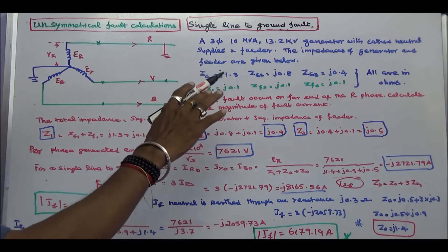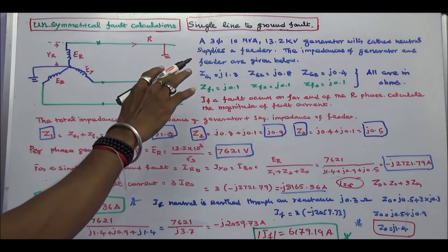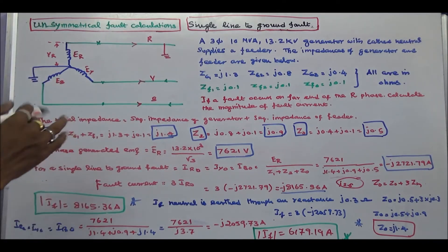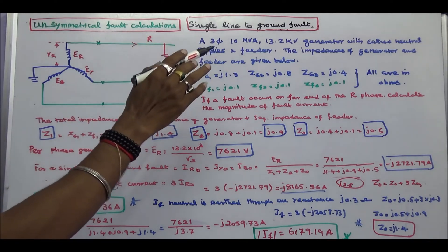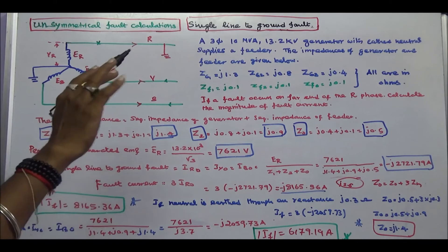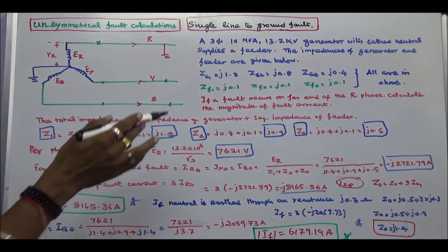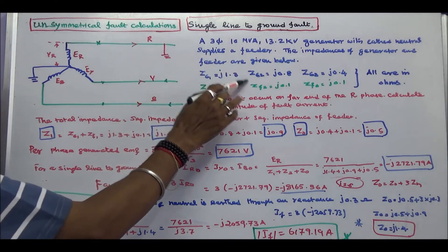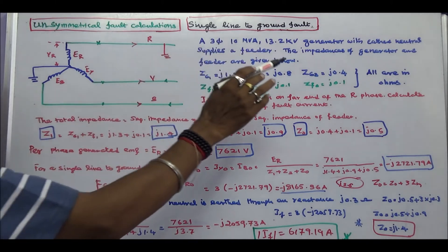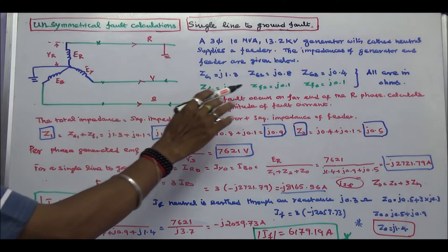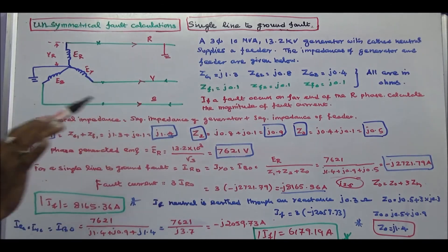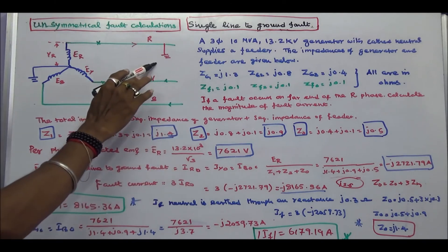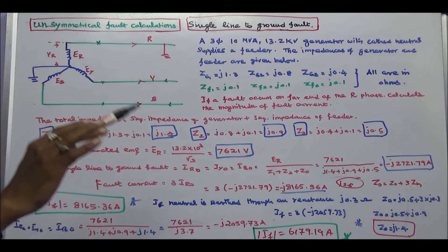The next problem is: a three-phase, 10 MVA, 13.2 kV generator with grounded neutral supplies a feeder. The impedances of generator and feeder are given below, all are in ohms. Positive sequence impedance of the generator is J1.3, negative sequence is J0.8, zero sequence is J0.4. Positive, negative, and zero sequence impedance of the feeder is J0.1. If a fault occurs on the far end of the R phase, calculate the magnitude of fault current.